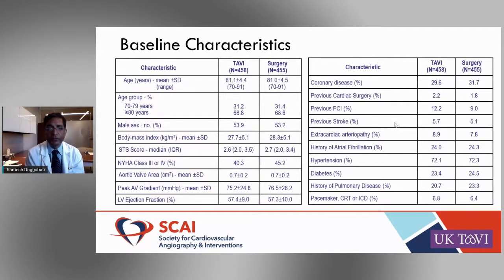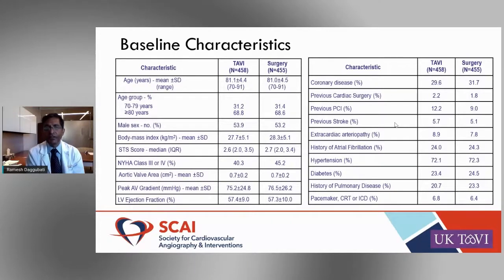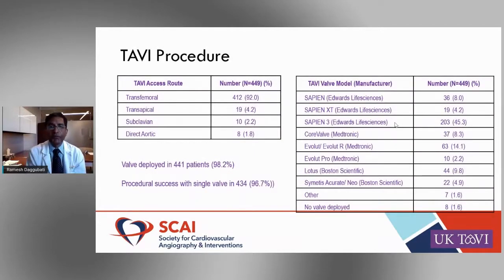Valve areas were similar — 0.7 ± 0.2 — with high peak gradients and preserved ejection fractions. Pacemakers were present in about 6.8% prior to allocation. The majority — about 92% — were performed transfemorally. In terms of valve types used: approximately 45% received a Sapien 3, Evolut about 14%, Lotus about 10%, with other valves making up the remainder.